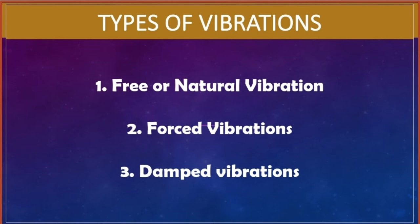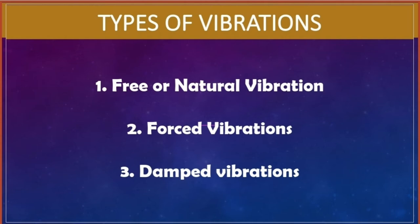Types of vibrations — basically there are three important types. First, free or natural vibration. Second, forced vibrations. Third, damped vibrations. Free or natural vibration: when no external force acts on the body after giving some initial displacement, the body is said to be under free or natural vibrations. In these vibrations, the vibration of the system is due to its own elastic properties, and amplitude and frequency remain constant.